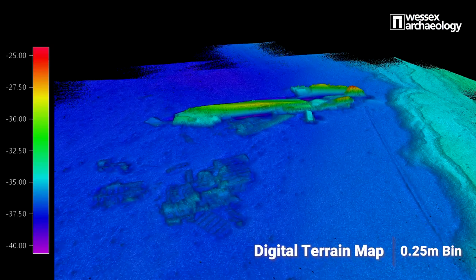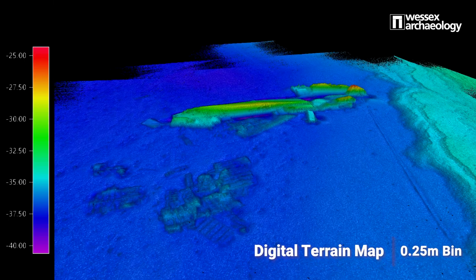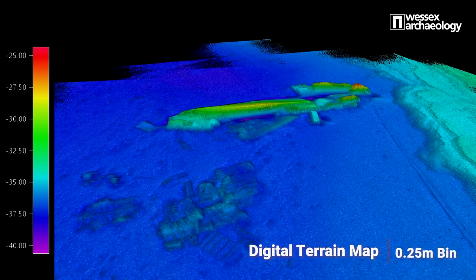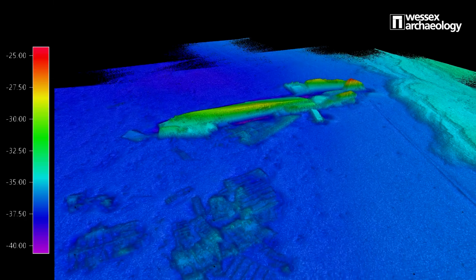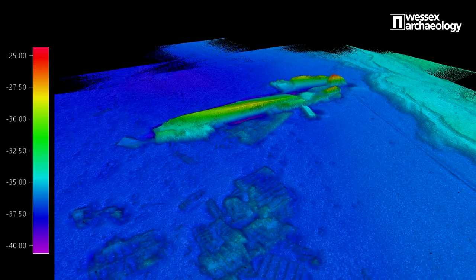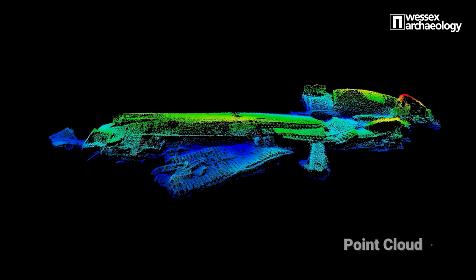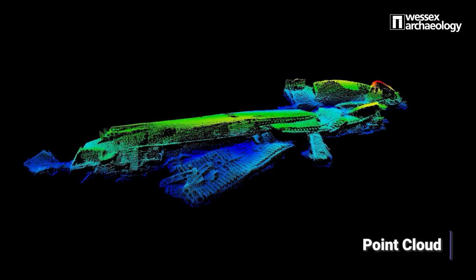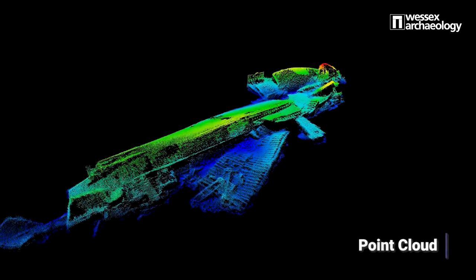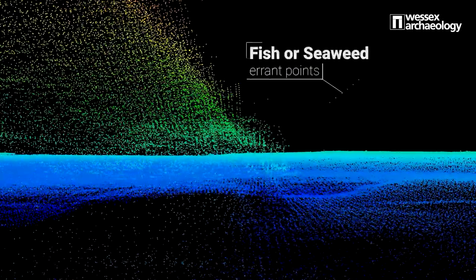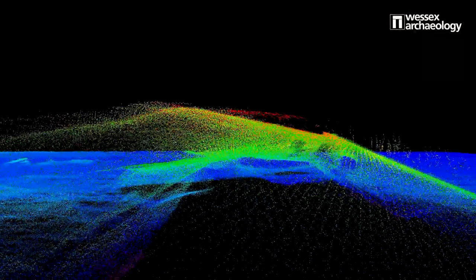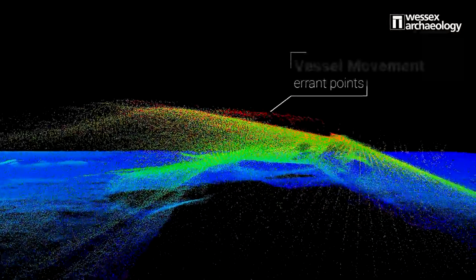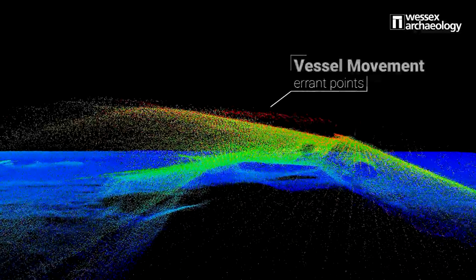This wreck is broken and partially buried but as a significant portion still remains proud of the seabed, it's likely that this data can be cleaned up in order to make a really accurate model by looking at the point cloud. There are some errant points dotted about — these could be fish or seaweed — as well as some areas that appear duplicated. These are likely the result of some vessel movement and at this stage we would look to process the data further in order to edit this out.